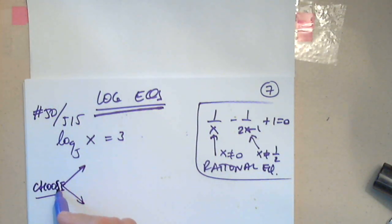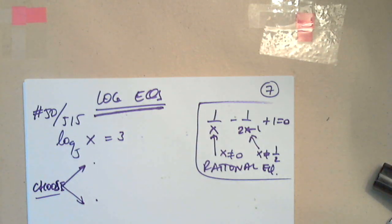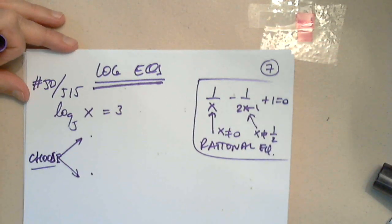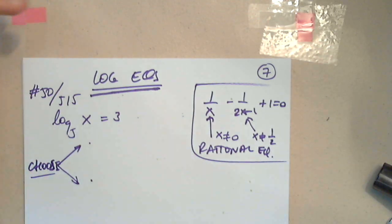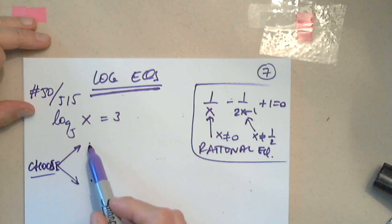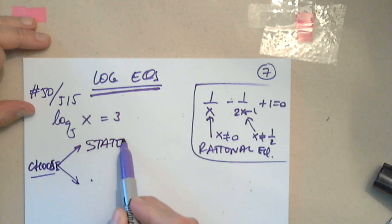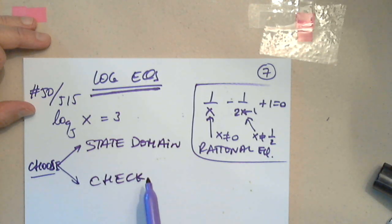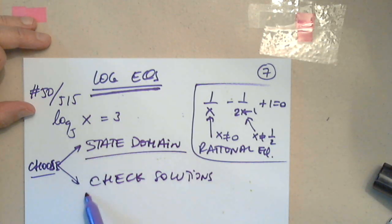You have to choose either this method or this method. It's up to you. So I'm not telling you which one is better, because it may be better for me to choose the first one, it may be better for you to choose the second one. It doesn't matter. But you have to choose one or the other. Either state domain, or check at the end, check solutions. One or the other.